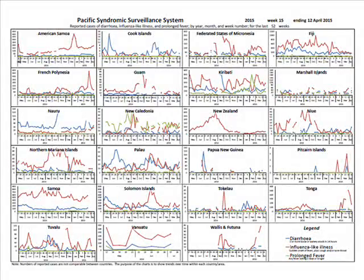This chart shows trends of diarrhea, influenza-like illness, and prolonged fever in 23 territories — it is a report of the Pacific Syndromic Surveillance System. A reader should be able to answer: what information is being displayed, why is it important, where does the source data come from, who is producing the report, who is the target audience, what impact or action do the producers want to trigger, what are the product's strengths and weaknesses, and will it have the intended impact?